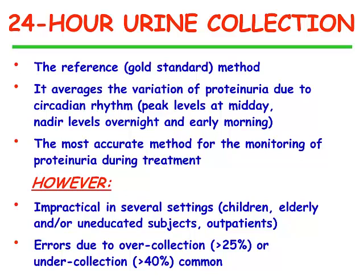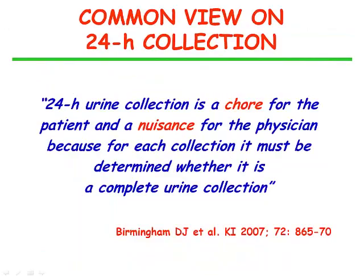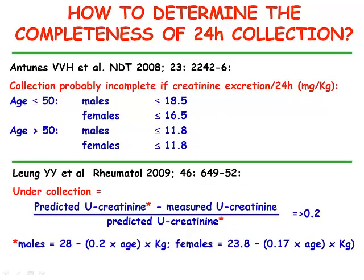More than 25% over-collection and more than 40% under-collection errors occur. For all these reasons, there is now a common view that 24-hour urine collection is a chore for the patient and a nuisance for the physician, because for each collection it must be determined whether it is a complete urine collection or not. There are two proposed formulas to know whether the urine collection is complete.